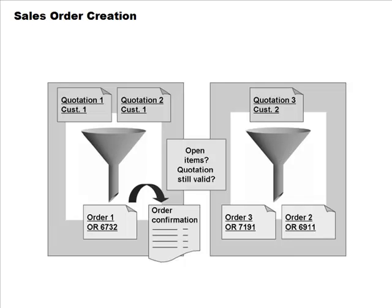Certain conditions must hold to combine quotations: they should have open items, still be valid, and come from the same customer. If those conditions are met, you can combine them into one sales order and send an order confirmation. Alternatively, you can take one quotation and break it up into multiple orders — either approach is valid.